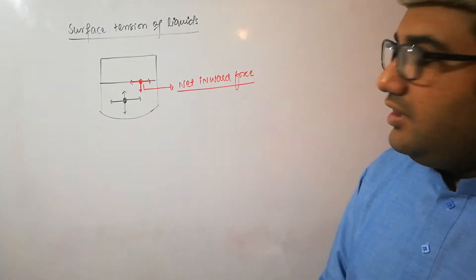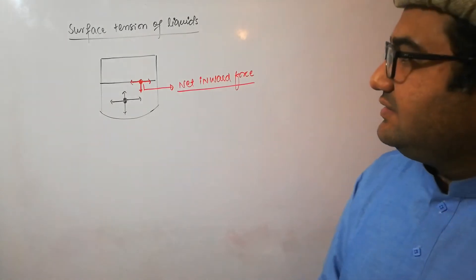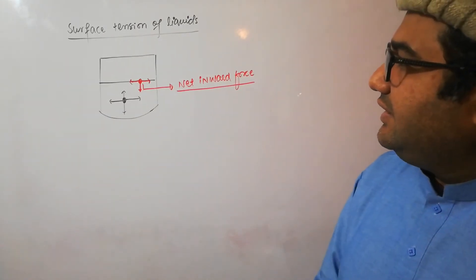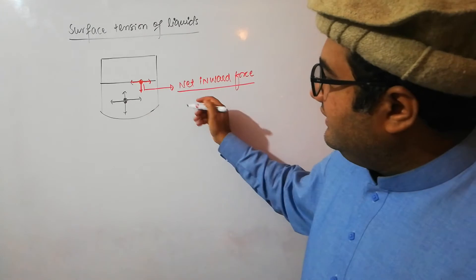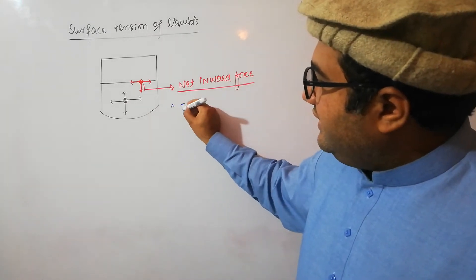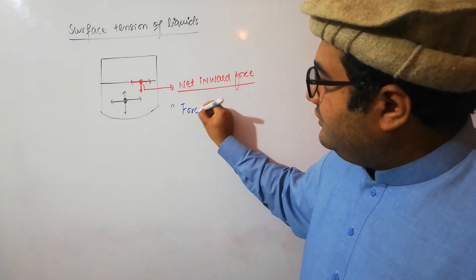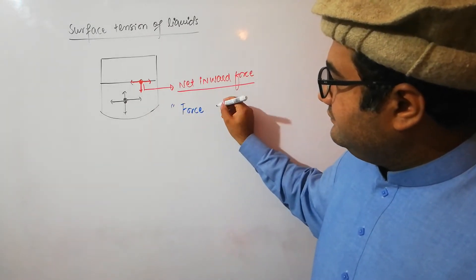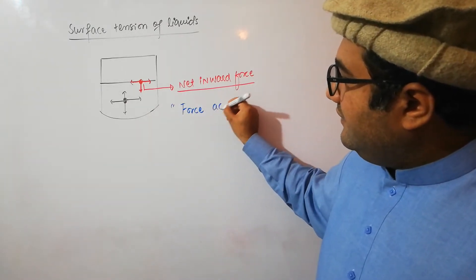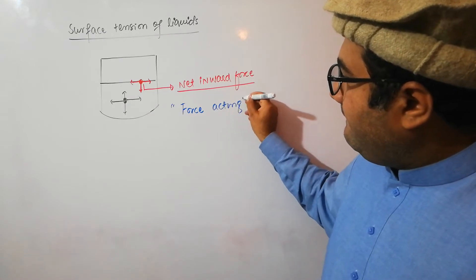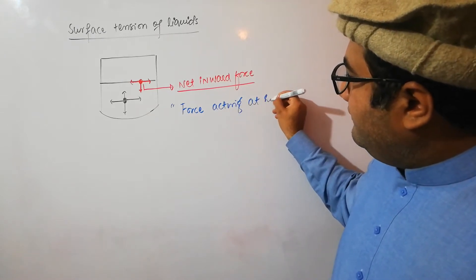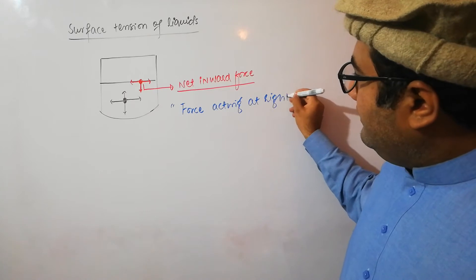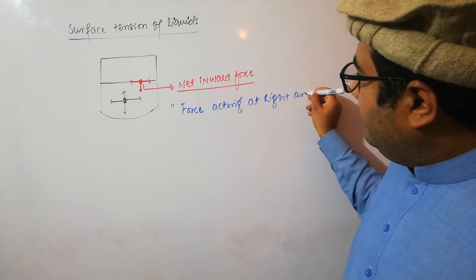Now, how can we define surface tension? Surface tension is actually the force acting at right angles on a unit length of an imaginary line drawn on the surface of the liquid.